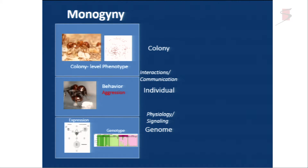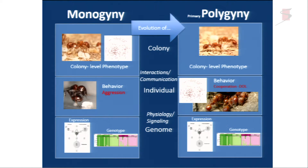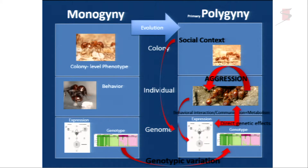This has implications at the colony-level phenotype. We want to derive the network from individual interactions of workers or queens and understand how that changes the whole colony-level phenotype — from a single-queen colony to a multiple-queen colony, or abstracting from solitary to social living organisms.